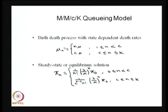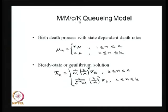The birth rates are lambda, since it is an infinite source population — all lambda N's are equal to lambda. The death rates are state-dependent: N times mu for states 1 to C, and C times mu from state C to K. I have not drawn the state transition diagram for MMC-K, but you can visualize it as a combination of the M/M/1/N and M/M/C models.